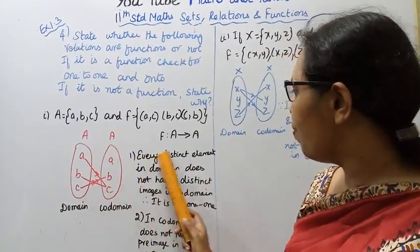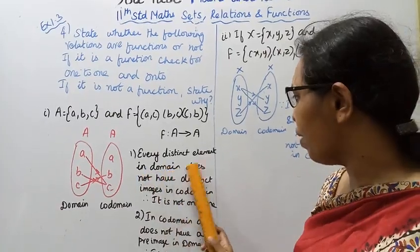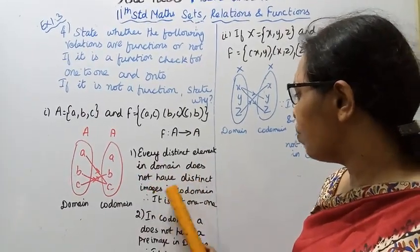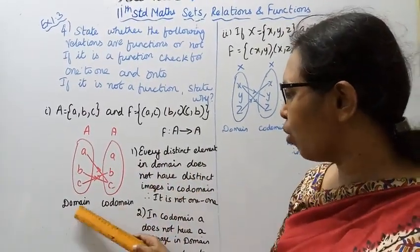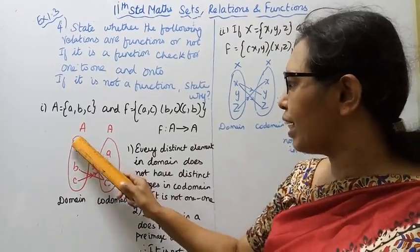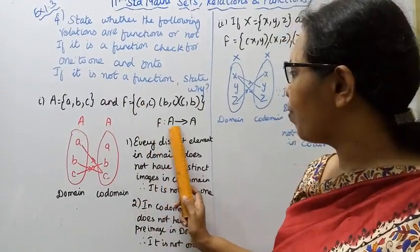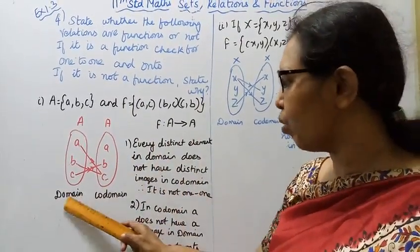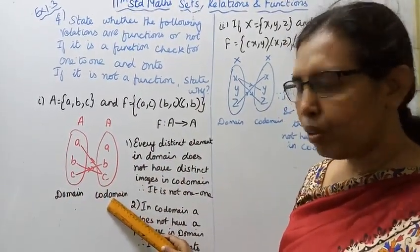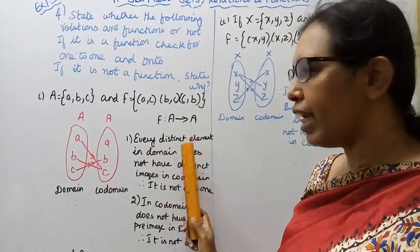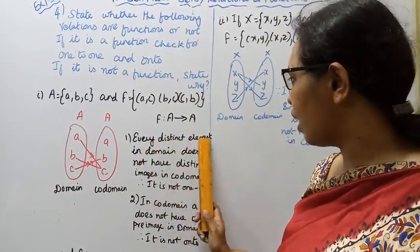See that every distinct element in domain does not have distinct images in codomain. It is a domain and codomain. A means {a, b, c}. This is domain and codomain.